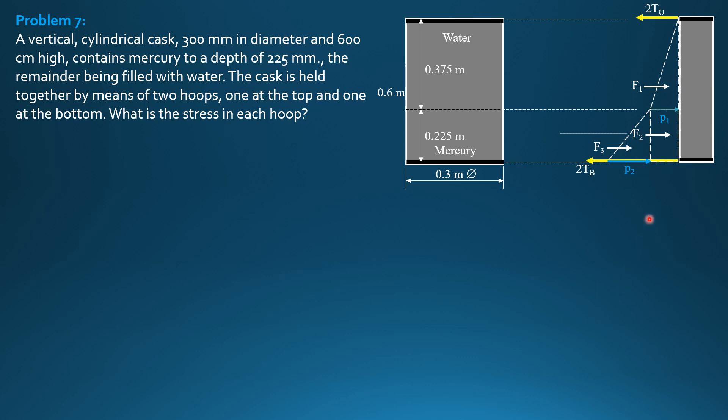So these are the locations of forces. There are three forces equivalent to this triangular pressure diagram, then this rectangular pressure diagram, then another triangular pressure diagram. For the location of the lines of action, F1, two-thirds of 0.375 is 0.25. Then 0.6 minus 0.25, so 0.35 from the bottom hoop.